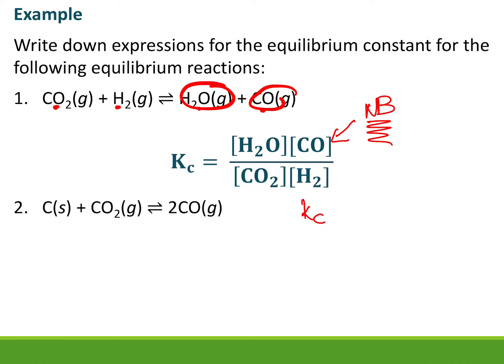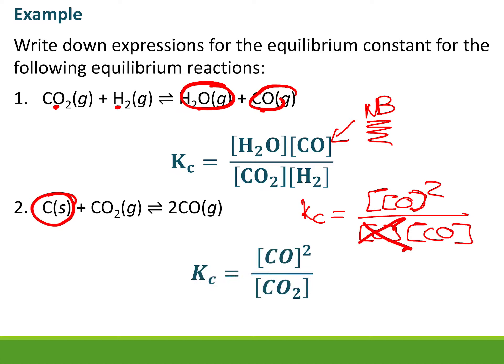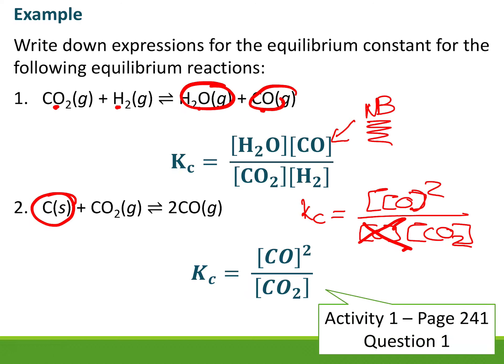For the next example, we'd have CO squared on the top, but one of the substances is a solid, so it gets a value of one and we don't need to include it. The Kc expression becomes: Kc = [CO₂][CO]² / [CO₂] — with a two coefficient included. Now, before you carry on with this video, do Activity One on page 241. Writing the Kc expressions is the first step in doing chemical equilibrium calculations.